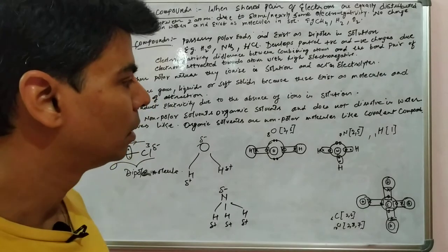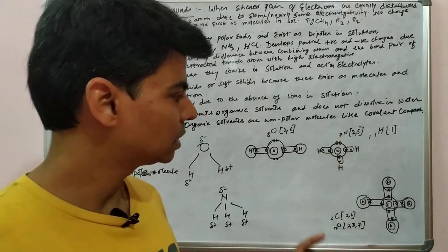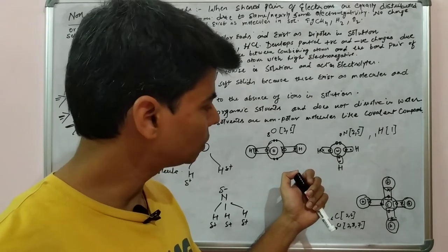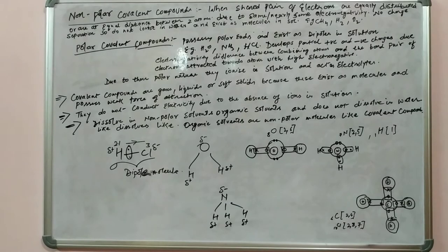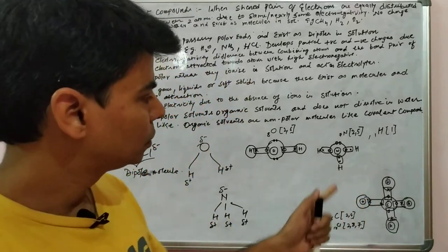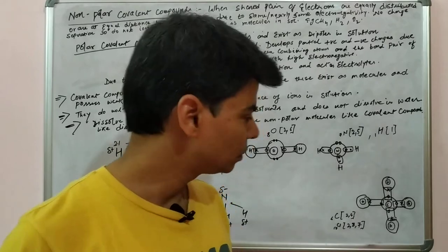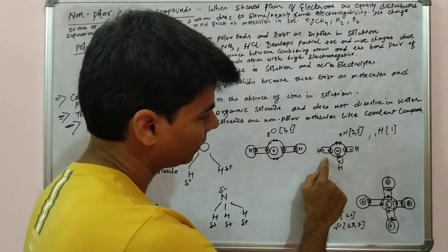Water exists as a stable compound. Similarly, ammonia: nitrogen's electronic configuration is 2,5, so it has five electrons in its outermost shell, and it has three hydrogen atoms attached. Each hydrogen atom tries to attain a doublet. So nitrogen shares three of its electrons — one with each hydrogen atom — and each hydrogen shares its one electron with nitrogen.